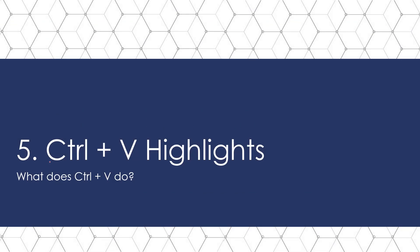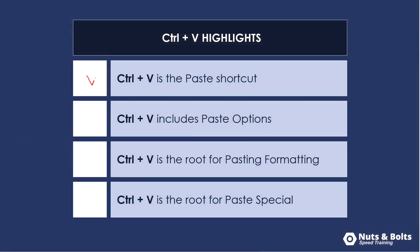For some quick highlights on what Control V does: Control V is the paste shortcut for copying and pasting content; Control V includes paste options, which saves you time from reformatting as you copy and paste between documents; Control Shift V pastes an object's formatting after you've copied it; and Control Alt V is the paste special shortcut with a variety of uses in Word, Excel, and PowerPoint.